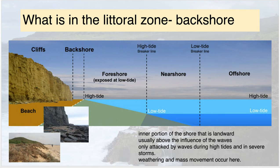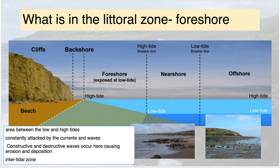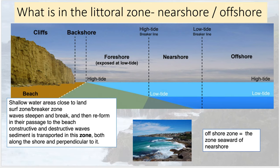In the backshore you could have cliffs and a beach, or you could have sand dunes — it's not always cliffs. On the foreshore, between high and low tide, this is a very dynamic area because it's constantly attacked by waves and currents. You have constructive and destructive waves here. This part of the foreshore is covered at high tide and exposed at low tide. You can't put an exact length on it — it depends on the beach, how steep the beach face is, and what the tidal range is.